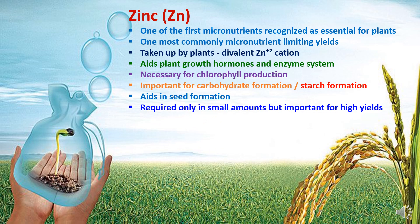Zinc was one of the first micronutrients recognized as essential for plants and one of the most commonly limiting yield factors. Zinc is taken by plants in the form of cation and it aids plant growth hormones and enzymatic activity. Zinc is necessary for chlorophyll production, carbohydrate formation, starch formation, and plays an essential role in seed formation. Although zinc is required only in a small amount, high yields are impossible without it.